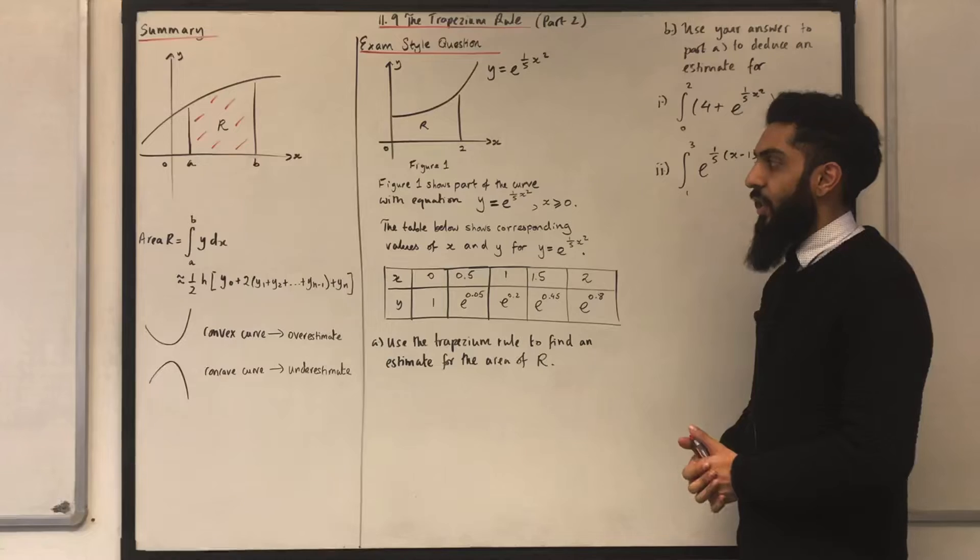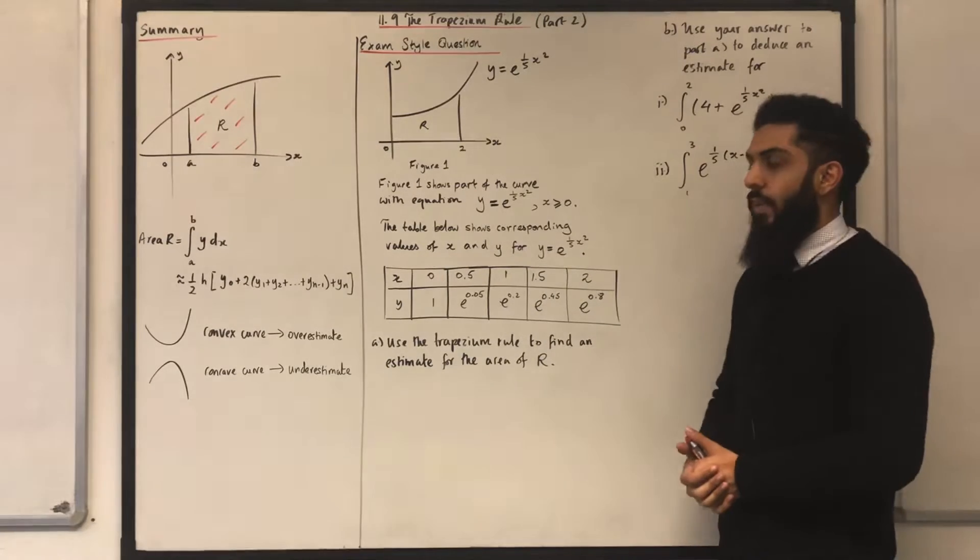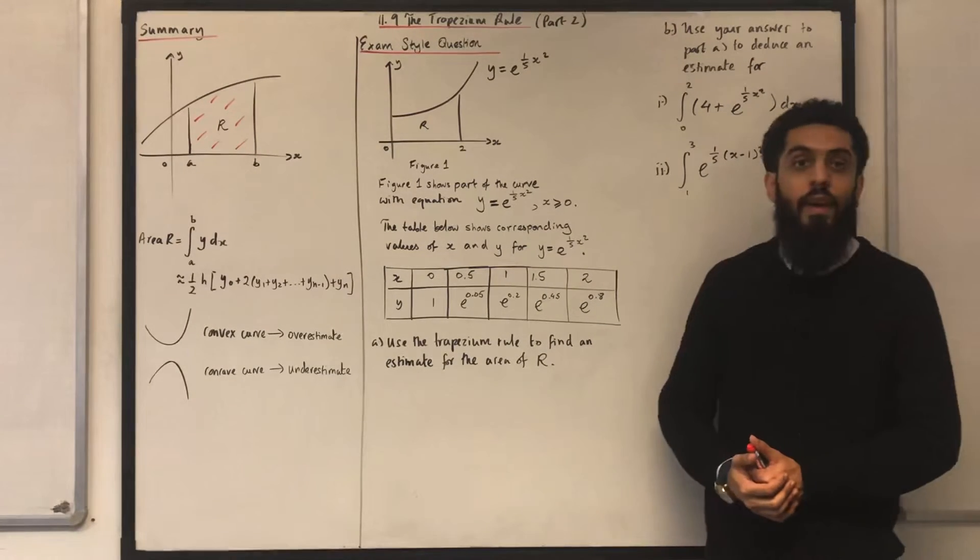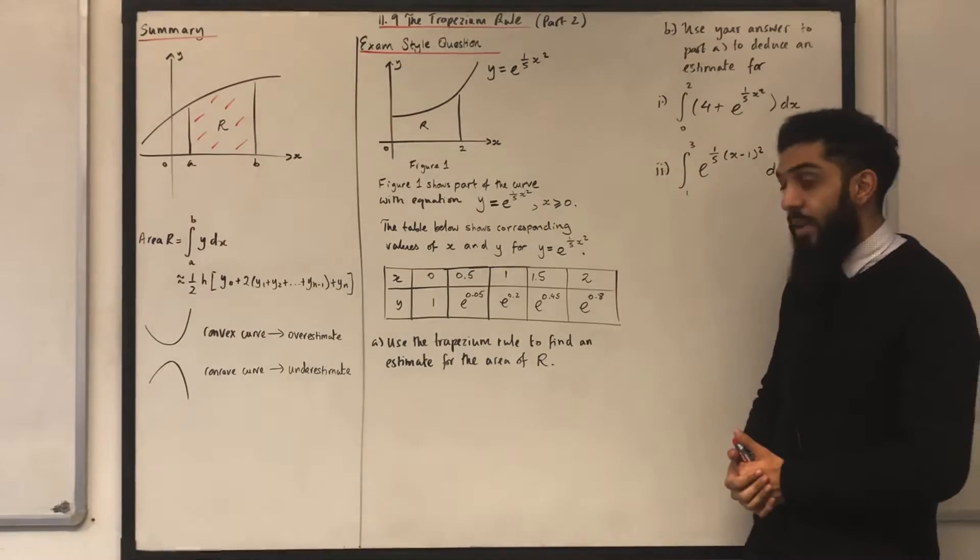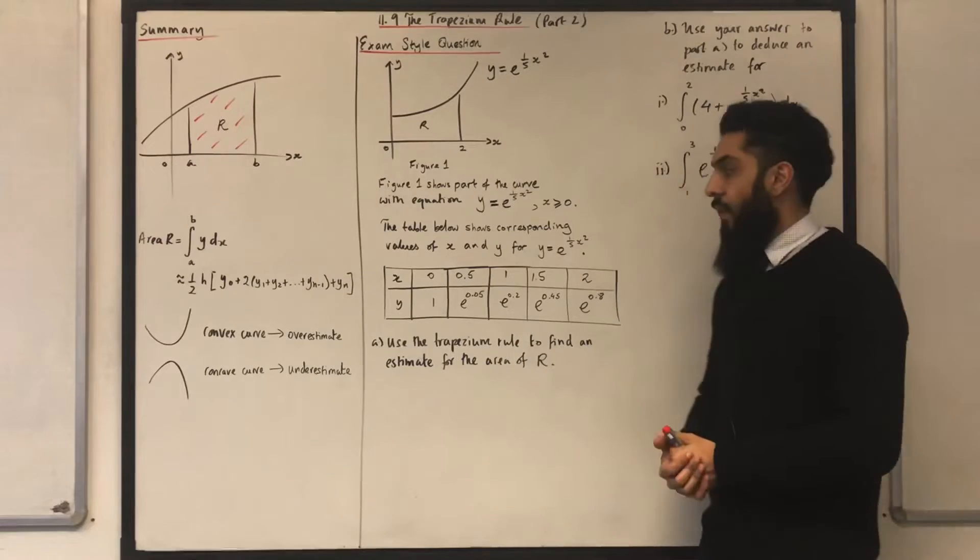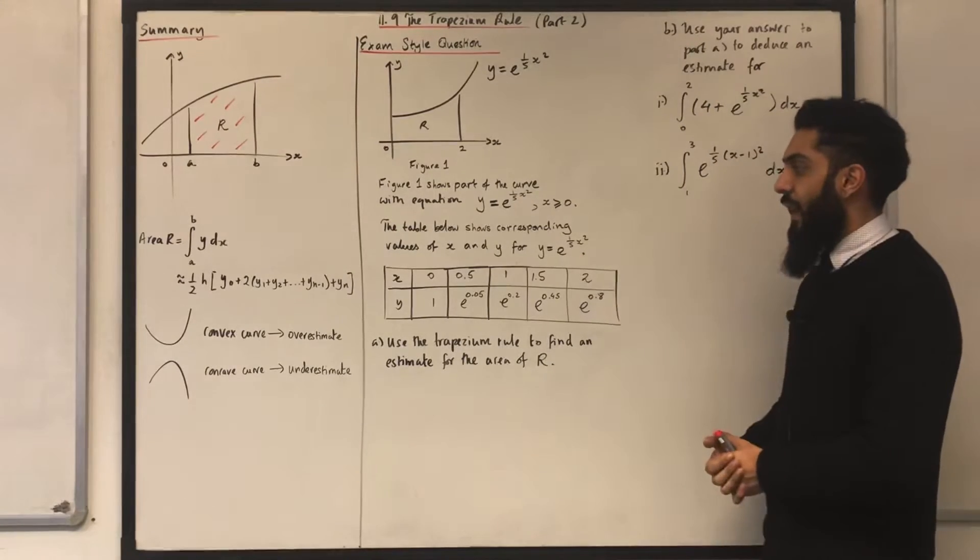Here is an exam style question. Figure 1 shows part of the curve with equation y equals e to the power 1 over 5x squared for x is greater than or equal to 0. The table below shows corresponding values of x and y for y equals e to the power 1 over 5x squared.